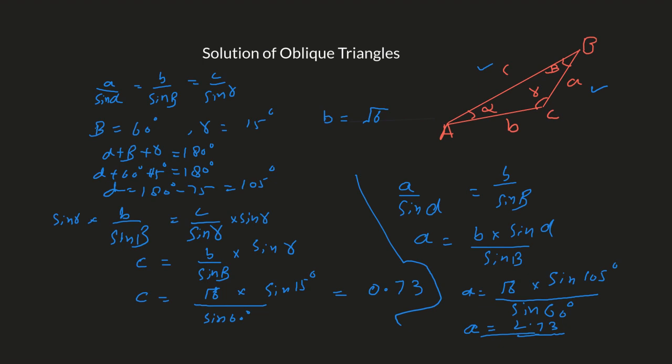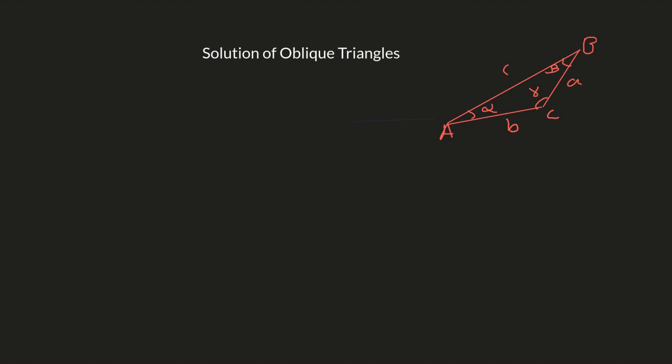Let's take another example. Alpha is 47 degrees, gamma is 53 degrees, and the value of b is 125. Pause the video and try to figure out the oblique triangle. Set up a triangle where the length of b is 125, gamma is 53 degrees, and alpha is 47 degrees. First, find the third angle, then use the law of sines to figure out the values of the sides.